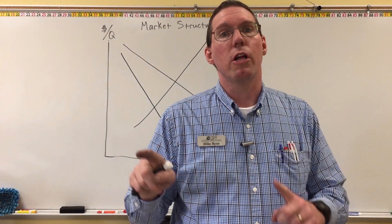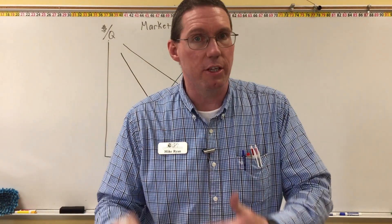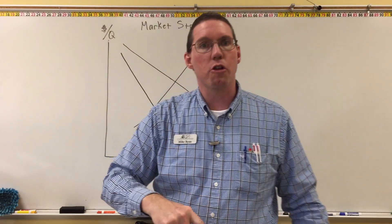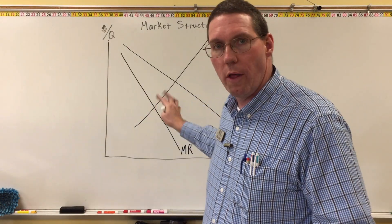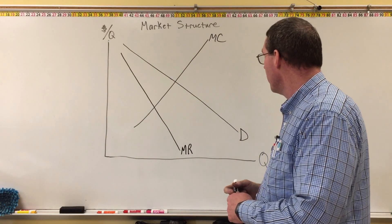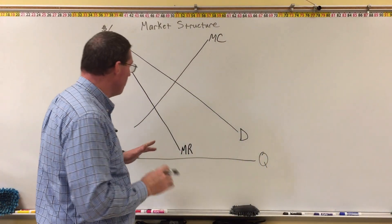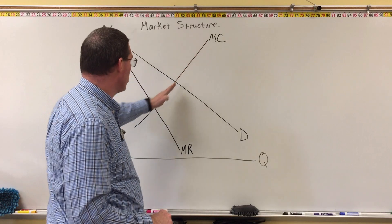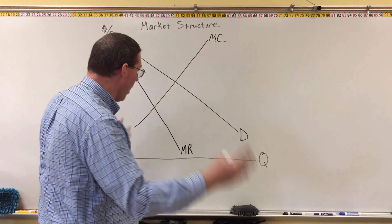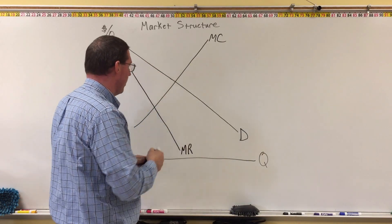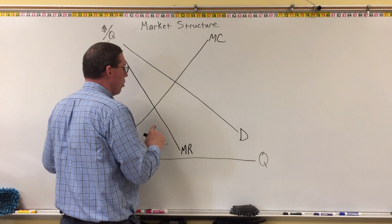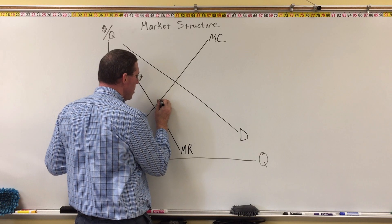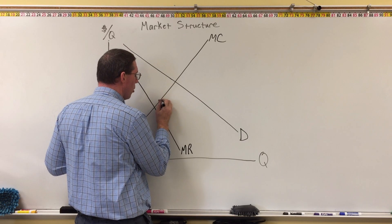In the next lesson we're going to learn how all five curves interact, but the demand curve and marginal revenue curve do not require that the cost curves be anywhere in particular on the coordinate plane. As I draw the average variable cost and average total cost curves, I'm only going to draw them relative to the marginal cost curve. The only requirement for the average variable cost curve is that its lowest point be where the marginal cost curve is.